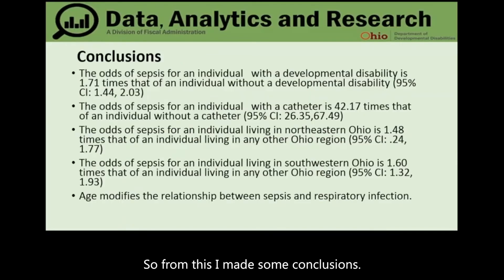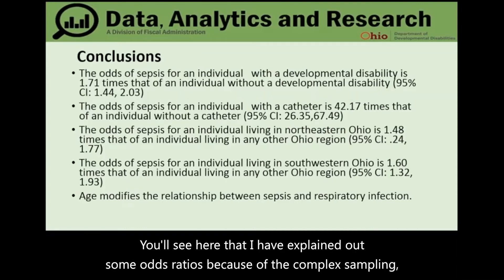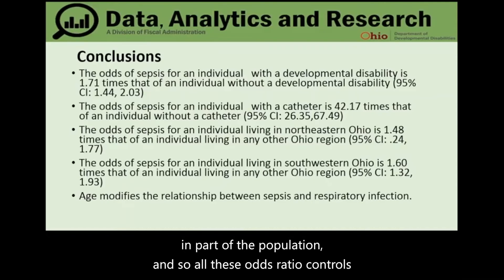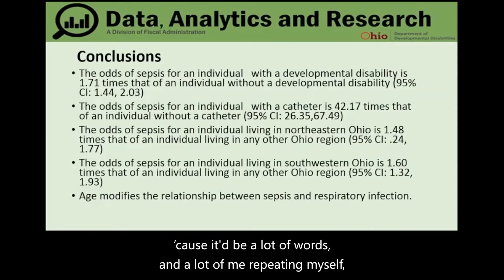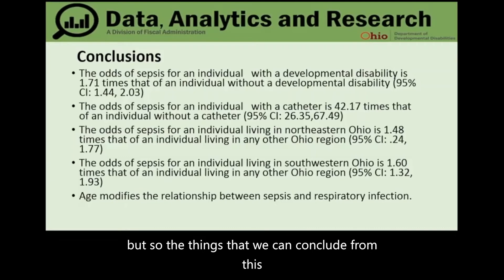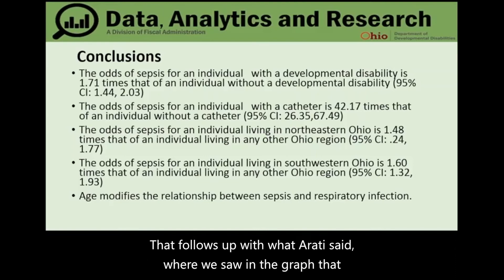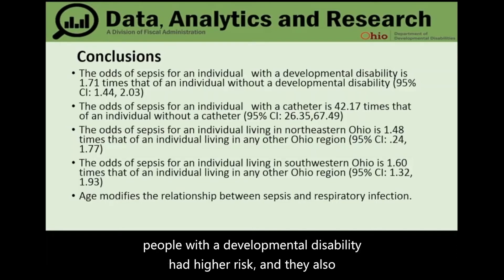Due to complex sampling, straight-out predictions were not possible, so odds ratios are presented, all controlling for everything else in the model. The odds of sepsis for an individual with a developmental disability is 1.71 times that of an individual without a developmental disability — consistent with the earlier graph showing higher sepsis rates in DD individuals.